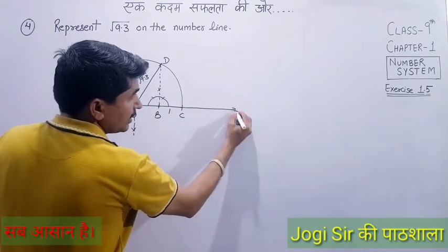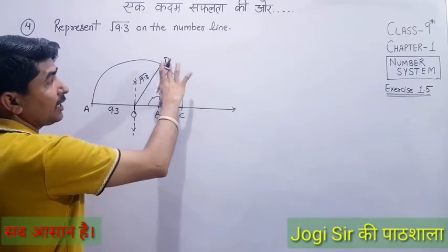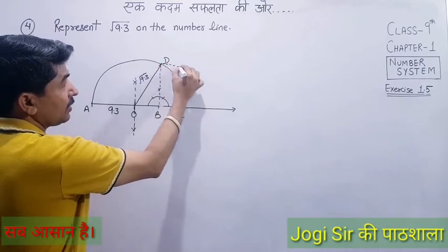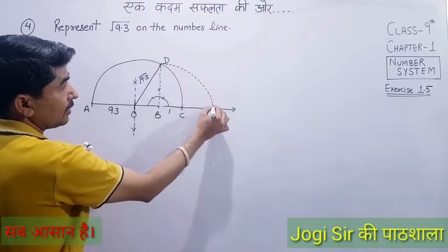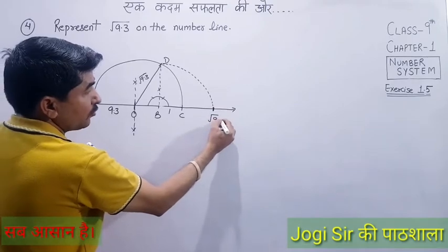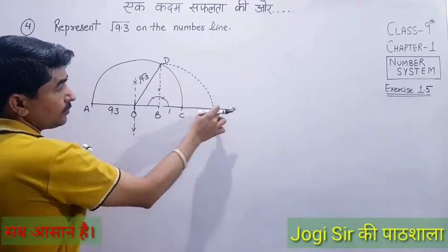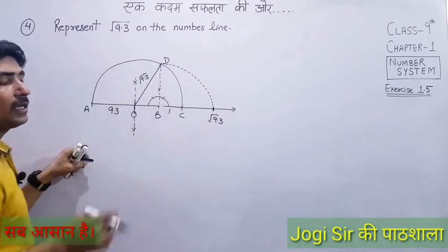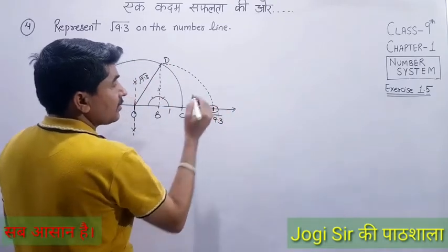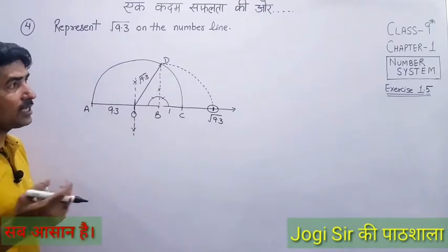The length OD will be equal to √9.3, but it's not yet on the number line. So we extend it: place the compass at B, open it to D, and mark an arc on the number line. This gives us √9.3 on the number line — approximately 3.1. That's our √9.3. This was a very easy method.